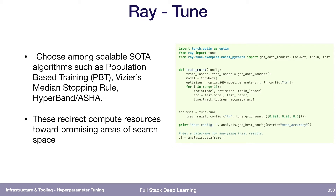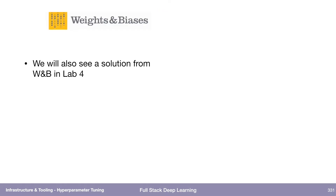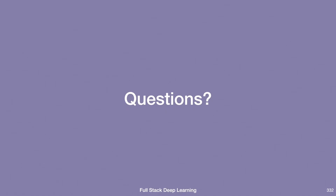Hyperband is a cool algorithm that redirects compute resources toward promising areas. You might launch eight experiments, but as they train, it becomes clear four of them are never going to be as good as the other four — at that point it makes sense to stop them and launch new parameter settings. Hyperband is a well-known paper describing this technique, and Weights and Biases also has a solution for this which will appear in an upcoming lab.